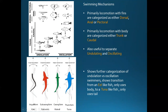Fish who use their fins to swim can be divided into three categories — dorsal, anal, and pectoral — based on which fin they use most. Fish who use their body and tail to swim can be categorized as trunk or caudal: trunk if they use mostly their body and caudal if they use only their tail.